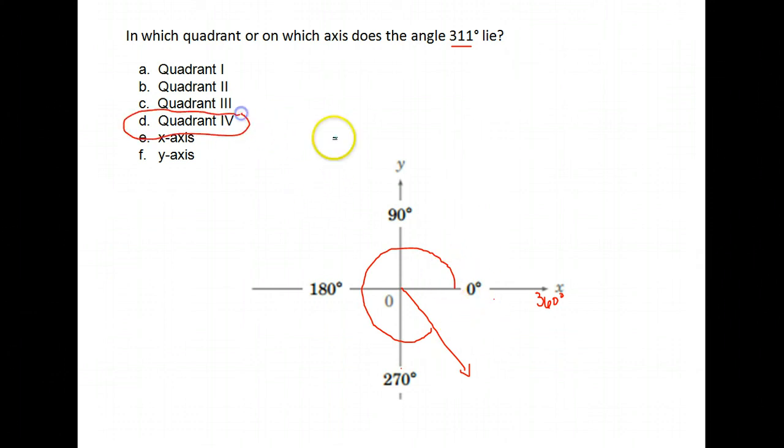So it's important that you know where your quadrants are. This is quadrant 1, and then 2, 3, and the last quadrant is 4.